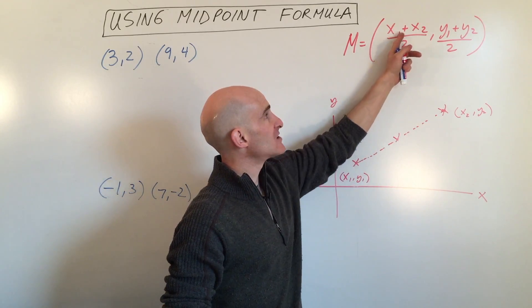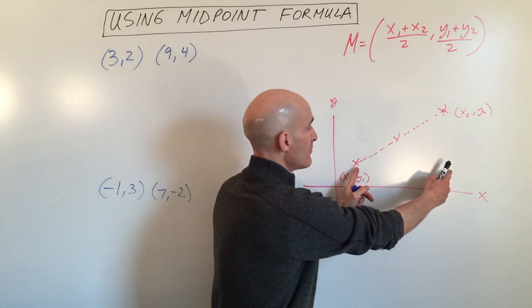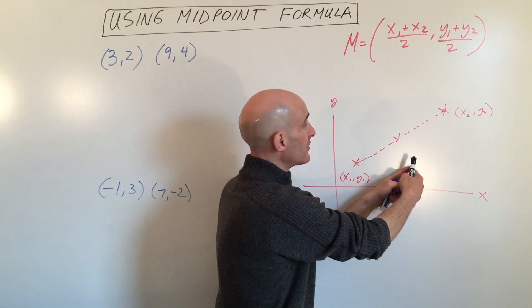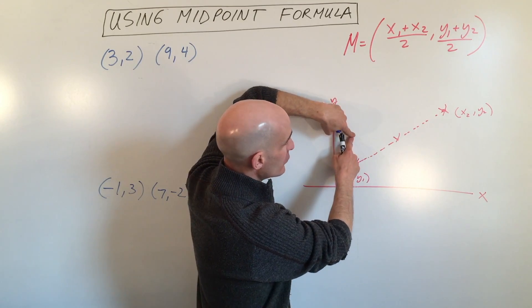What we're doing is we're actually taking like an average. We're adding the x coordinates together and dividing by two. That gives us the middle horizontally. And we're adding the y coordinates and dividing by two, and that gives us the average or the middle vertically.